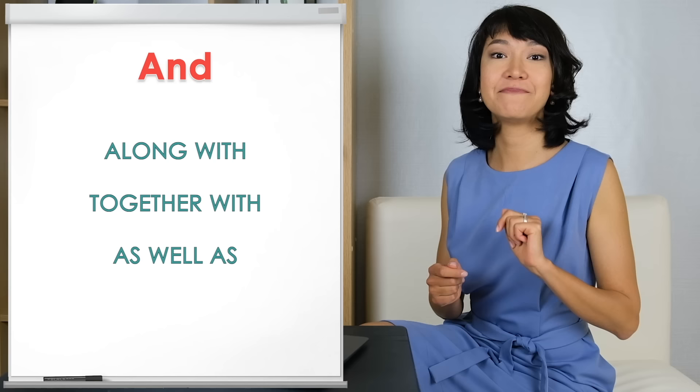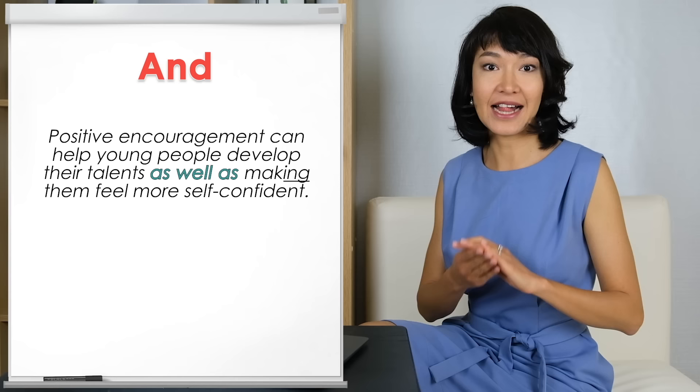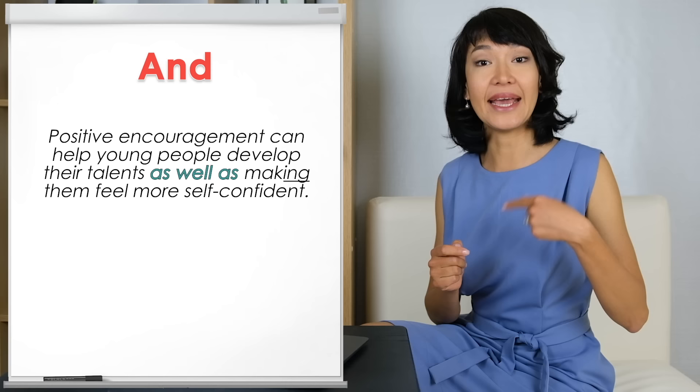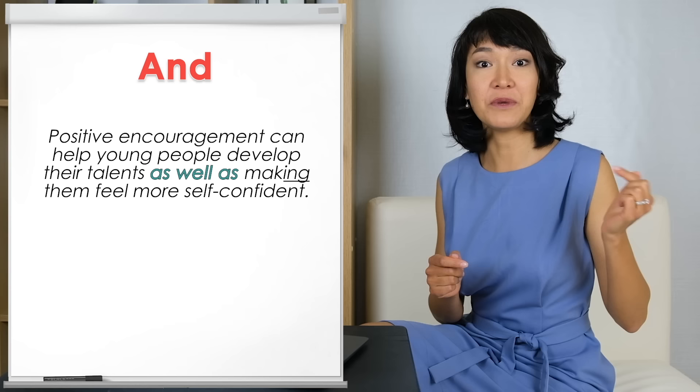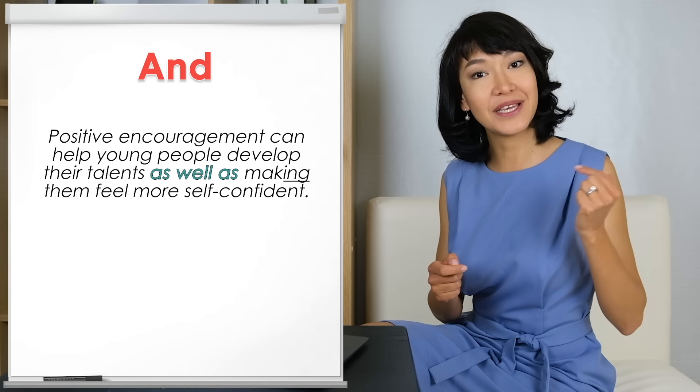Now, let's leave contrast and comparing to one side for a moment and think about some simple ways to add new information to what we have just written. Of course, the word we often use to do this is AND. But there are synonyms we can use instead, such as ALONG WITH, TOGETHER WITH, AS WELL AS, and BESIDES. Here is an example: 'Positive encouragement can help young people develop their talents, as well as making them feel more self-confident.' Notice the gerund 'making' after the linking words. We can use ALONG WITH, TOGETHER WITH, and BESIDES in exactly the same way.